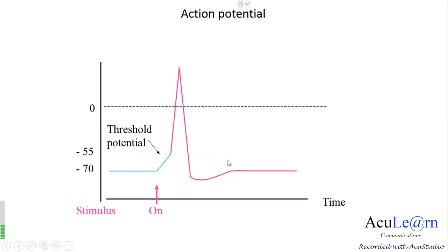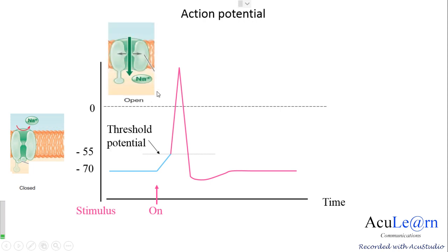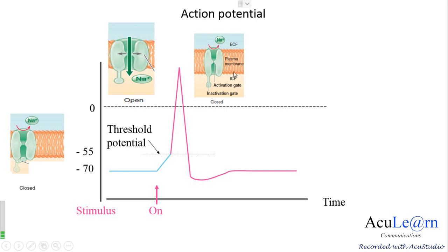If you look at the action potential graph — please watch my video on ionic basis of action potential, link in the description box below — at the resting membrane potential of minus 70 millivolts the voltage-gated sodium channel conformation is closed and capable of opening. From minus 55 millivolts up till the peak, the conformation is open and allows the influx of sodium ions. From the peak to one-third of the repolarization phase, the conformation is inactivated — closed and incapable of opening — and once it reaches the resting membrane potential the conformation changes back to closed and capable of opening.